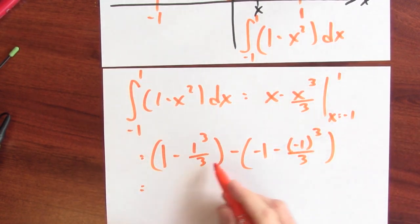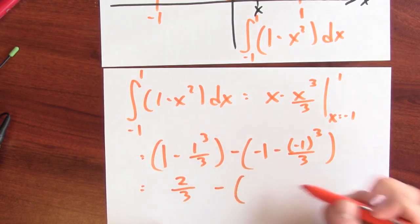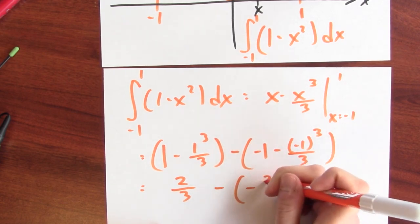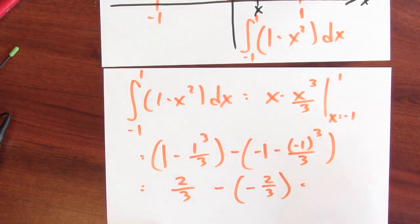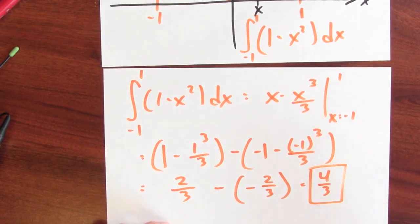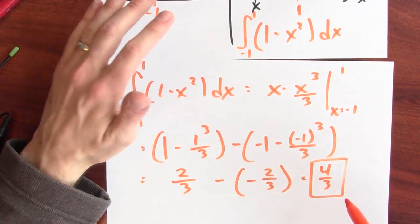But what's this? This is 1 minus a third, that's 2 thirds, minus minus 1 plus a third, which is negative 2 thirds. And 2 thirds minus negative 2 thirds is 4 thirds. So the area of this region is 4 thirds square units.